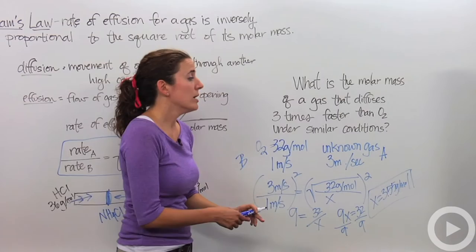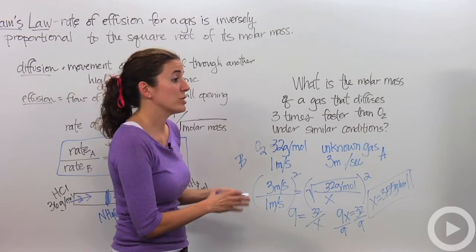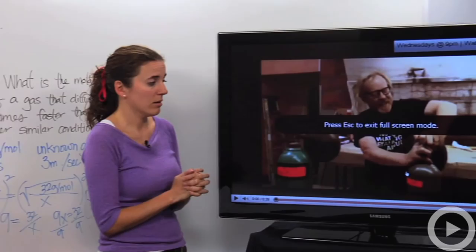x equals 3.55 grams per mole. This is my molar mass of my unknown gas. So this is how we can do it mathematically. And these are the kind of questions you're probably going to see. Let's actually go and watch a video of Graham's Law in action.